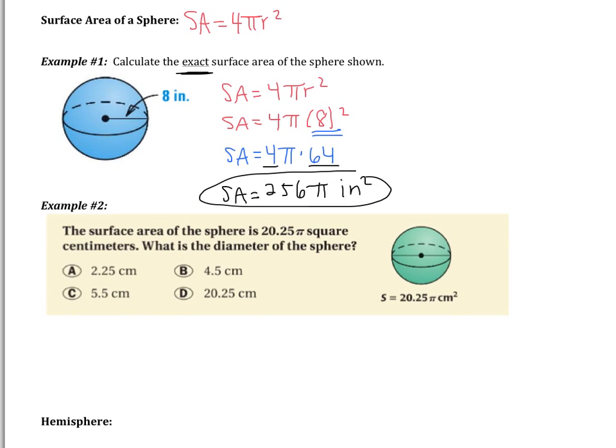Here is the example that I would like you to try. It says the surface area of the sphere is 20.25 pi square centimeters. What is the diameter? So right now, you're going to work backwards. I gave you the surface area. You're finding the diameter. So pause the video and try this one on your own, please. Come back after you have finished. Good luck.